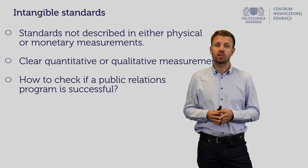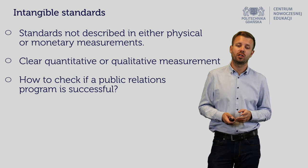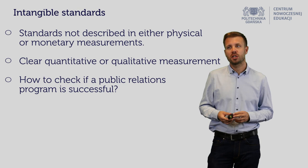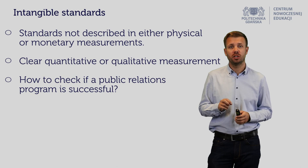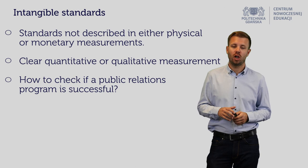To sum up, you have different types of standards: physical standards, cost standards, capital standards, revenue standards, program standards, and intangible standards. The key is not only knowing what each type of standard means, but mostly understanding why you would choose to use a physical standard instead of a cost standard, or when it's most appropriate to use revenue standards.